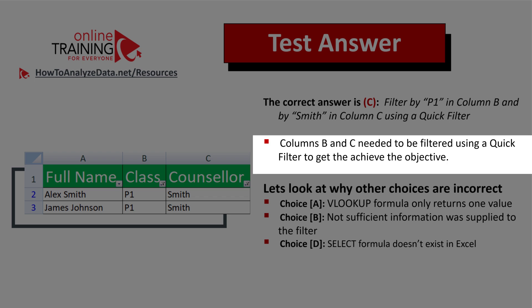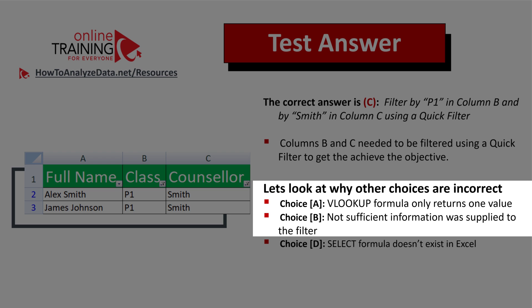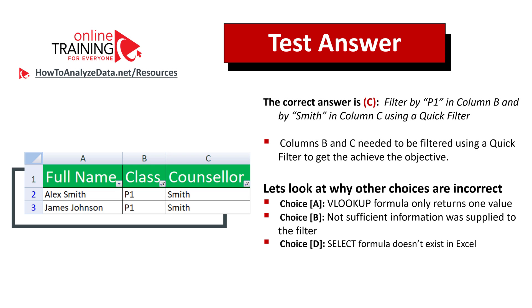Now let's look at why the other choices are incorrect. For choice A, the VLOOKUP formula only returns one value. Choice B is incorrect because not enough information is supplied in the filter to select the correct values. And choice D is incorrect because the SELECT formula doesn't exist in Microsoft Excel. Hopefully you've nailed this question and now know how to answer similar problems on the test.